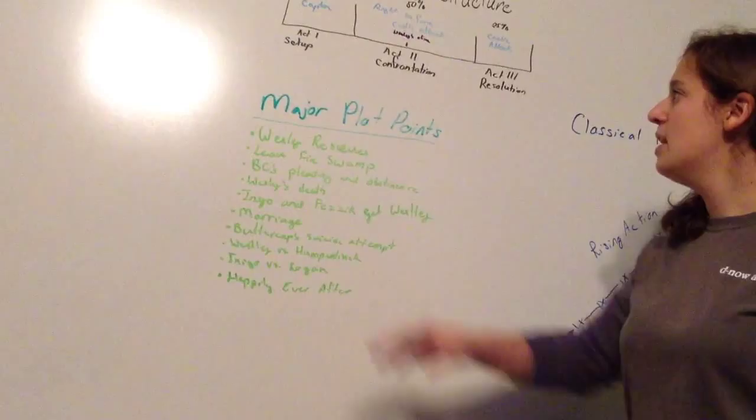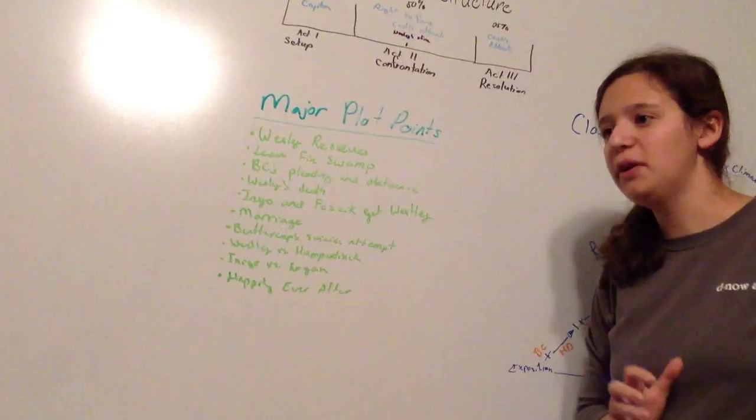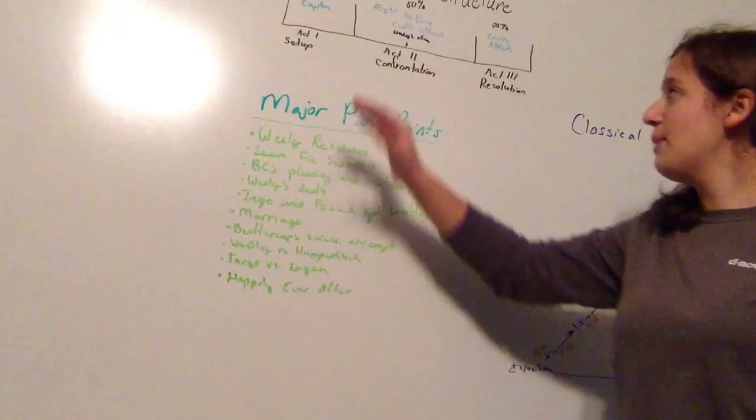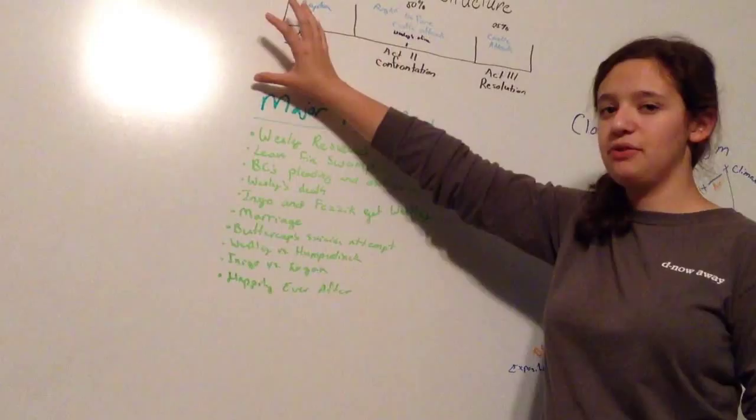If we apply this to The Princess Bride, I would say the setup goes all the way from when we see Buttercup and Wesley fall in love, then we see them separated by Wesley's supposed death, all the way up to right when Buttercup is captured. So in the setup, we learn that she loves Wesley but thinks he's dead, so she's engaged to Humperdinck, and now she's being captured. That's our setup for the whole movie.